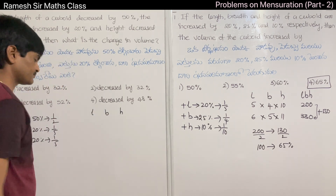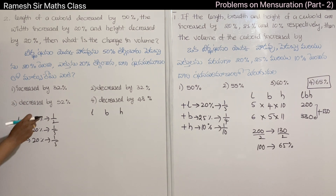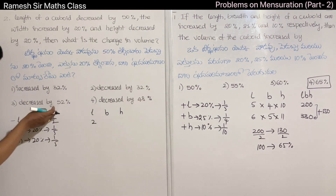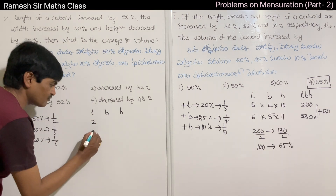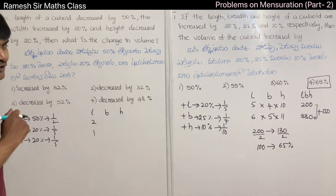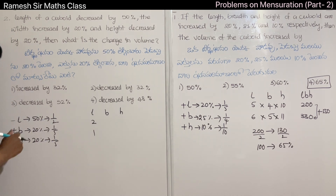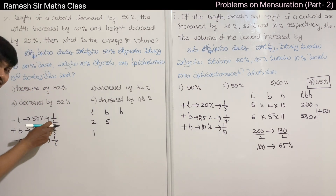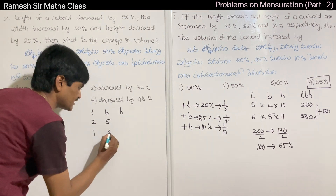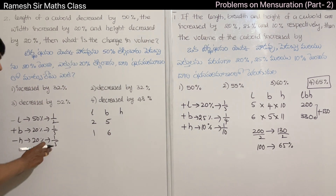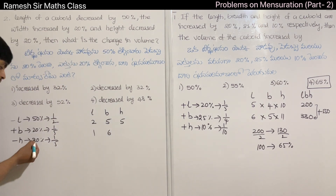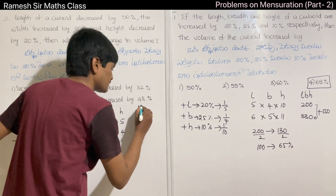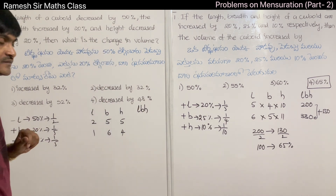Using L, B, H: for 50% decrease — take 2 units, decrease by 1, giving 1 unit. For 20% increase in breadth — take 5 units, increase by 1, giving 6 units. For 20% decrease in height — take 5 units, decrease by 1, giving 4 units.